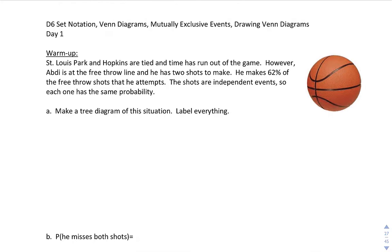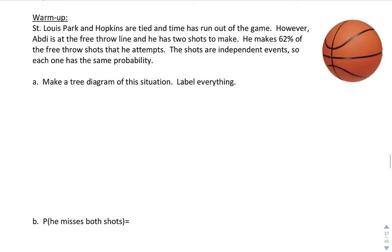So a warm-up, which is review. St. Louis Park and Hopkins are tied and time has run out of the game. However, Obdi is at the free throw line and he has two shots to make. He makes 62% of the free throw shots that he attempts. The shots are independent. Each one has the same probability. Make a tree diagram of the situation.